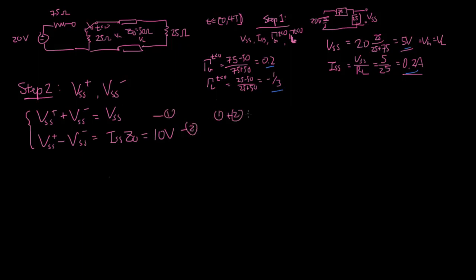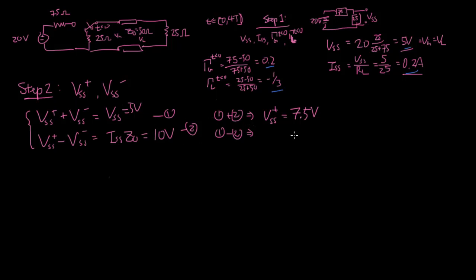The difference between the two is going to be equal to VSS times Z naught, which is 10 volts. By adding the two equations together, two times VSS plus equals 15 volts, so VSS plus equals 7.5 volts. And if we take the difference, two times VSS minus equals 5 minus 10, which is negative 5 volts, so VSS minus equals minus 2.5 volts. That gives us the two pieces of information we need to complete step two.